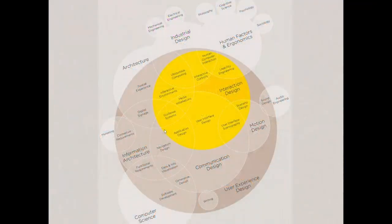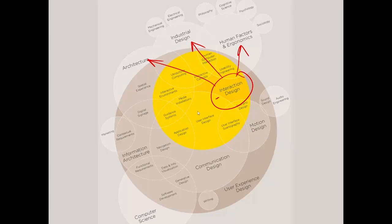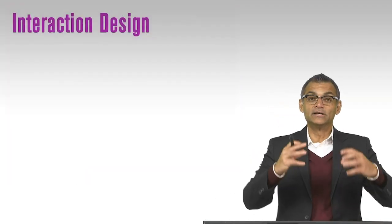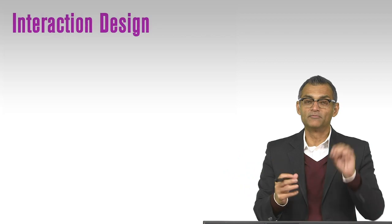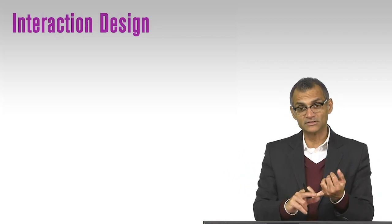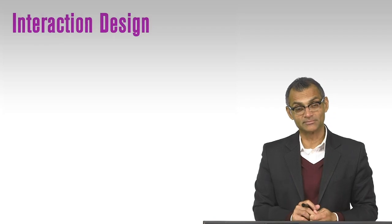To wrap up, interaction design is a complex and broad discipline that relies on a whole range of other disciplines: human factors and ergonomics, industrial design, architecture, information architecture, computer science, communication design, user experience design, motion design, and more. Interaction design looks at the engagement between people and devices, buildings, and spaces — but very often the focus is on digital technologies, behaviors, and social interaction. Thank you.